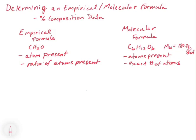To go from the empirical formula to the molecular formula, we multiply by a factor. In this case, we multiply by 6: carbon subscript 1 times 6 gives C6, hydrogen 2 times 6 gives H12, and oxygen 1 times 6 gives O6. The empirical formula weight is 12 plus 2 plus 16, which is approximately 30 grams per mole.